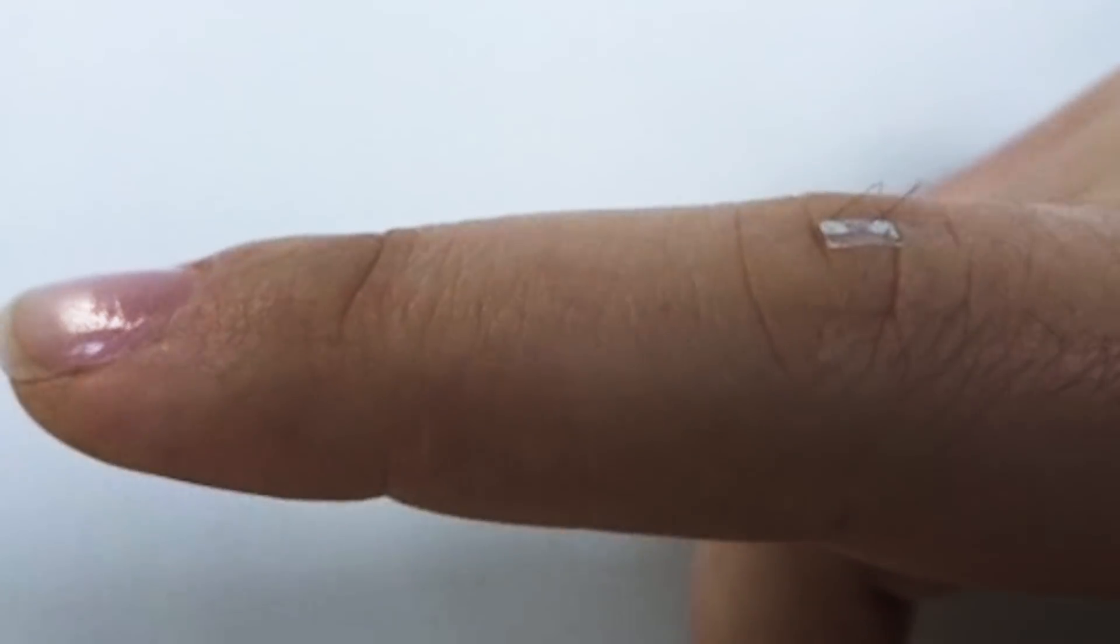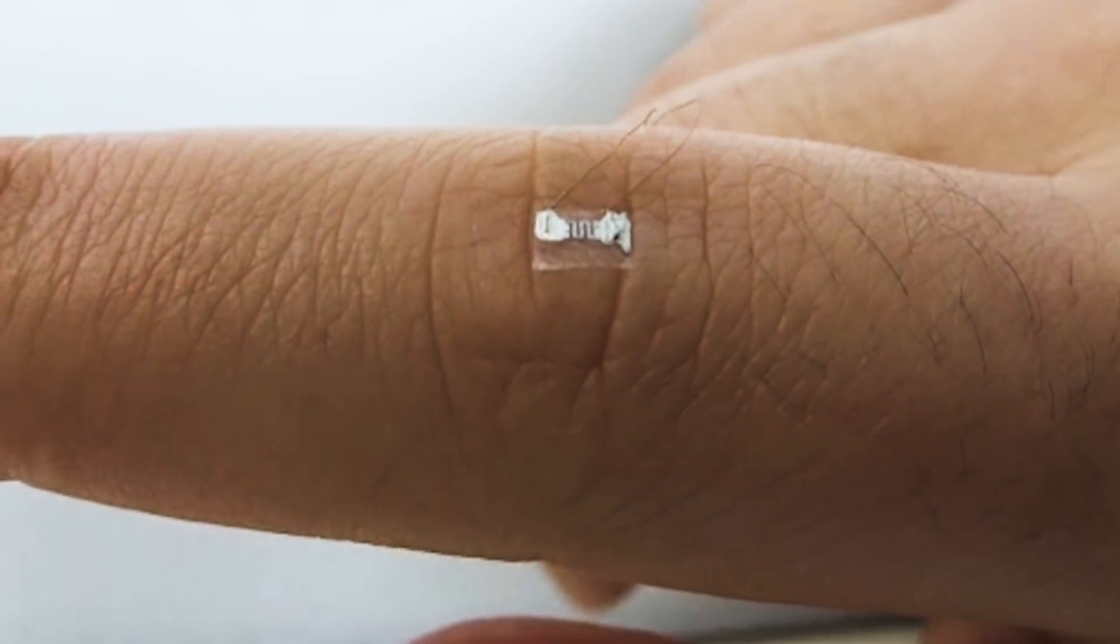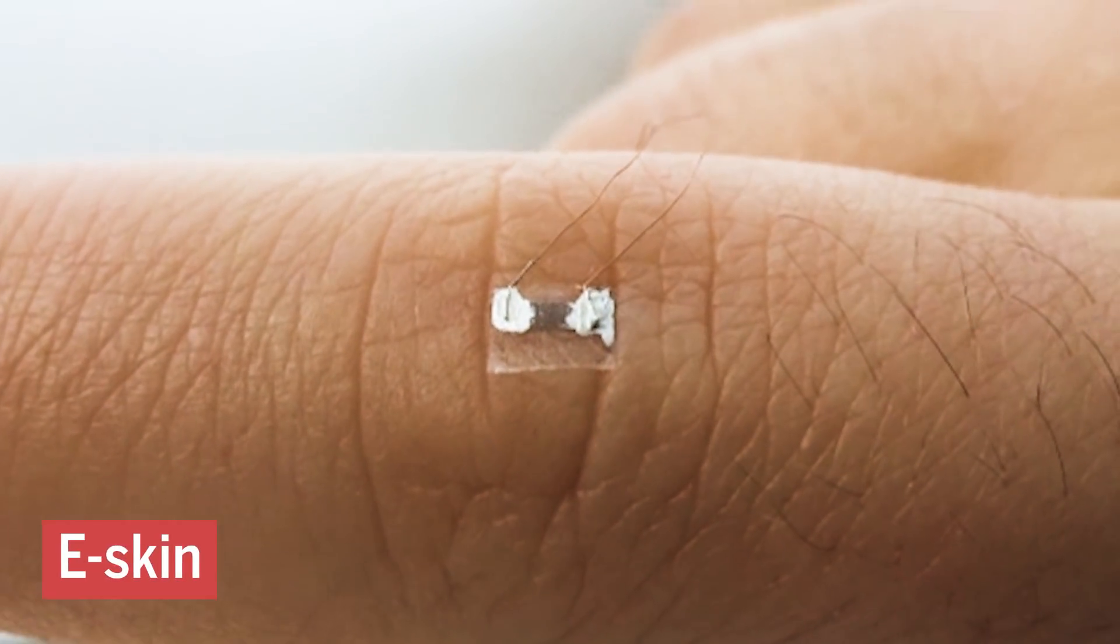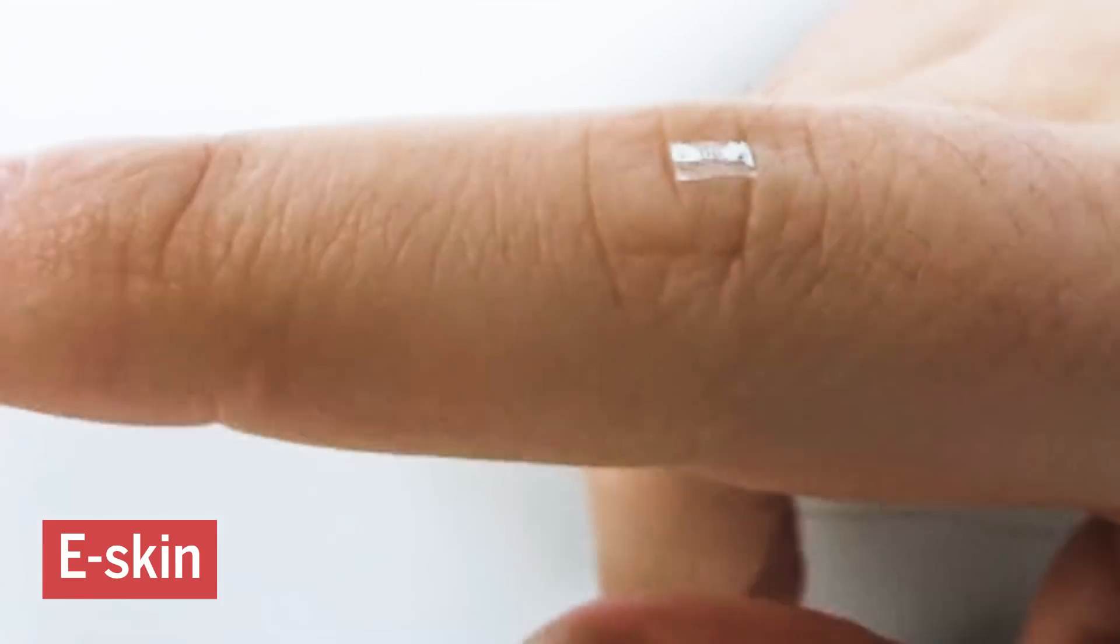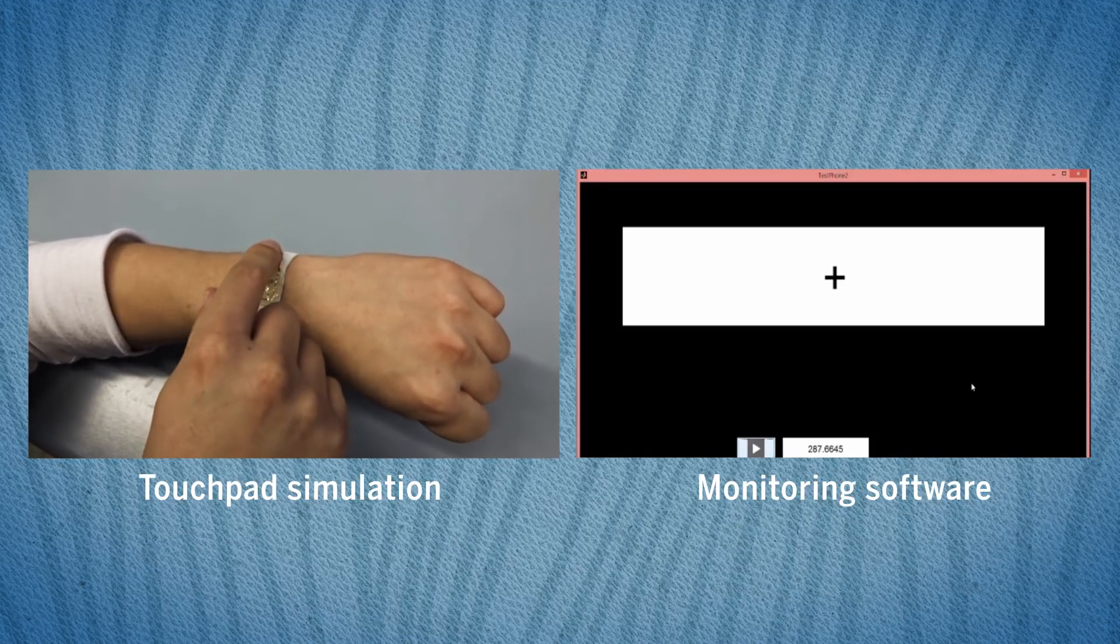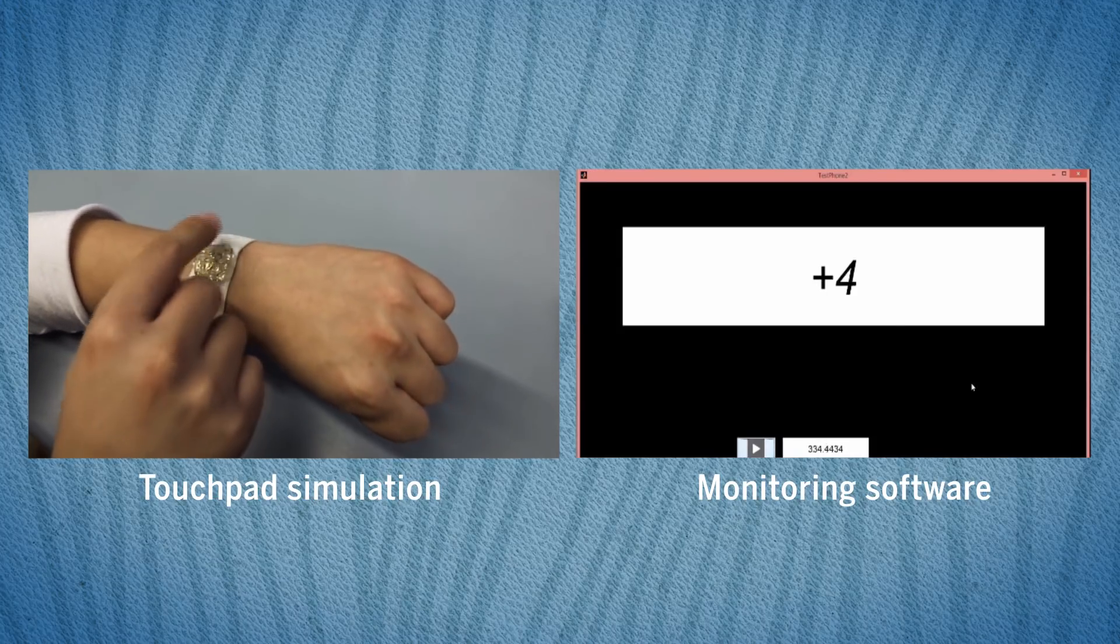A new wearable electronic skin could change that. Researchers have developed e-skin that can track small movements, allowing users to control virtual objects using their hands and fingers.